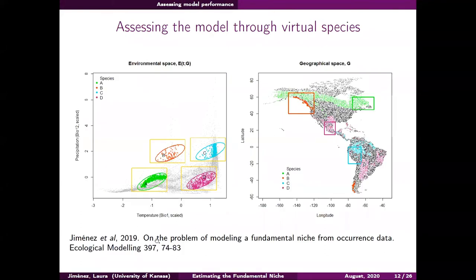All details about how to set the model using presence points and tolerance ranges are in a paper we published last year. I'm going to show some results obtained using virtual species. We defined the ellipsoids representing these virtual species and moved the center to different regions of environmental space, using exactly the same ellipsoid in four cases, to explore the effect of the gray cloud of environmental points that exist in the Americas.